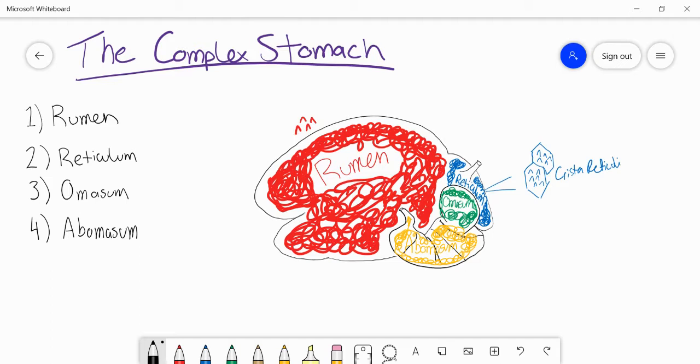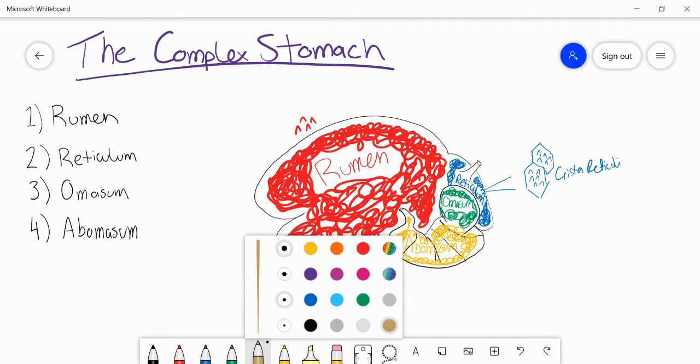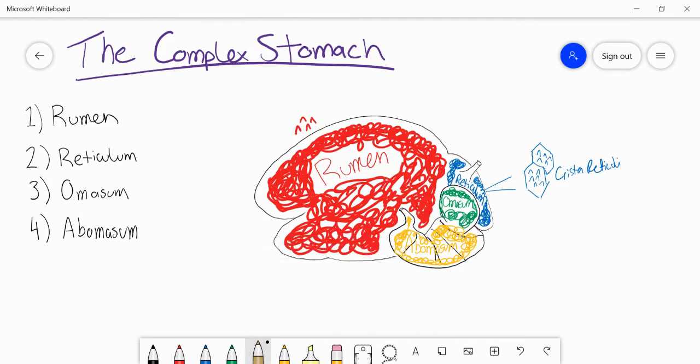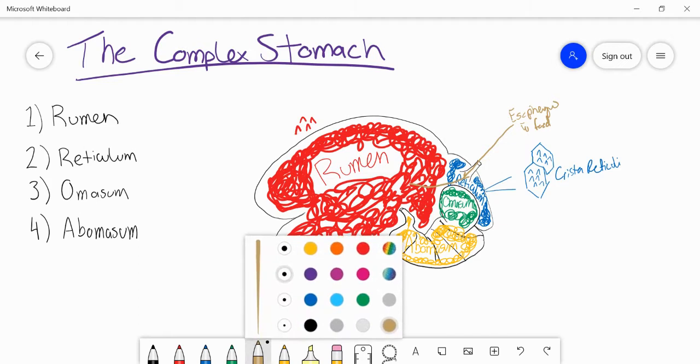So what I'm going to do now, I'll take brown - we'll pick this, they call it gold, but to me it looks more brown. And we'll draw a little picture of how the food is going to work its way around the stomach as it gets ingested and gets broken down by the bacteria and the muscles inside of this large complex stomach. So the food is going to come in through the esophagus. Food's going to come in. It's not going to go into the reticulum directly. It's actually going to go straight into the rumen.